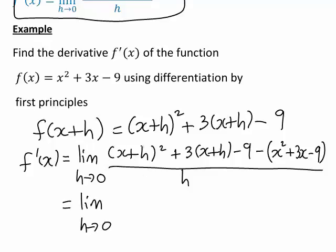So (x+h)² becomes x² + 2hx + h², and 3 times (x+h) will just become 3x + 3h.